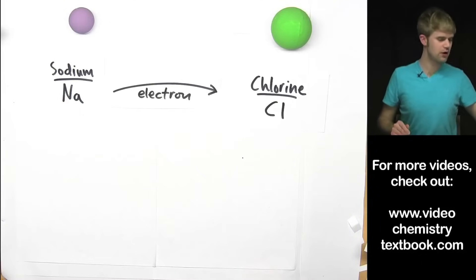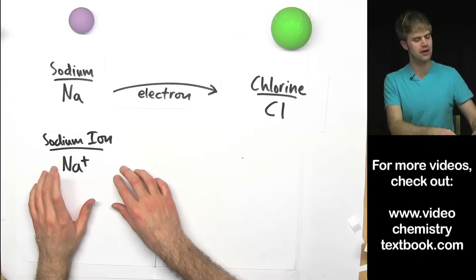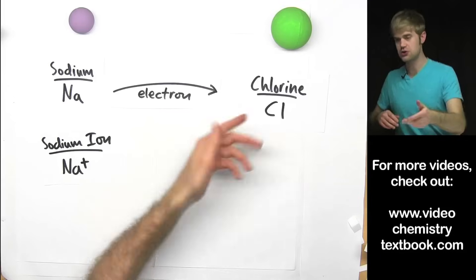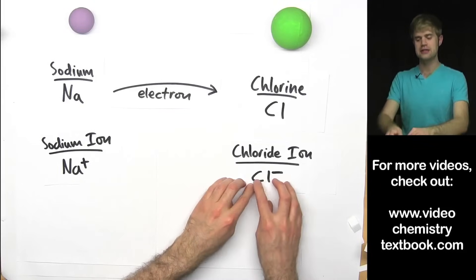Sodium loses one of its electrons to chlorine. So that gives us a sodium ion, which we can abbreviate as Na+. And since chlorine gets an extra electron, it becomes a chloride ion, Cl-.